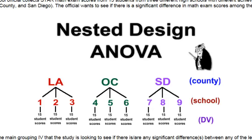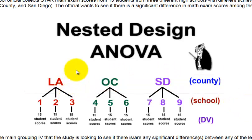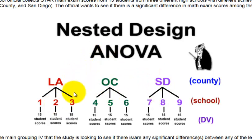The best way to explain this is with an example. We're trying to decide if one of the counties is better at teaching mathematics than the other counties. So your first IV is county, and it has three levels: Los Angeles, Orange County, San Diego. Each county has three different schools — they picked a high-performing, a medium-performing, and a low-performing school from each county.